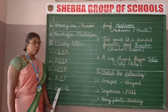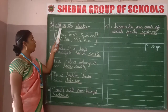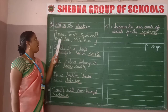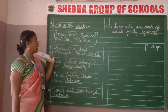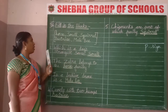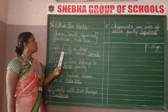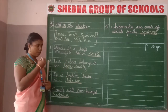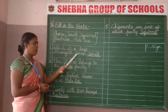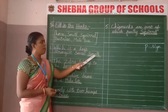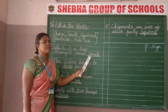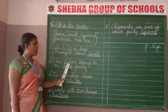Section 4 — fill in the blanks. Options given: horse, smell, squirrel, Bactrian, male bee. Number 1: which is a dog's strongest sense? Dogs can sense smell. Spelling of smell: S-M-E-L-L. The correct answer is smell.